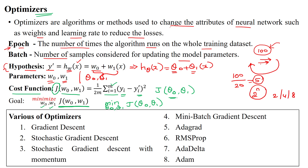Some books use theta and some use w, so we have to keep that in mind. There are various optimizers available: gradient descent (also called batch gradient descent), stochastic gradient descent, and many more optimizers available for machine learning and deep learning.